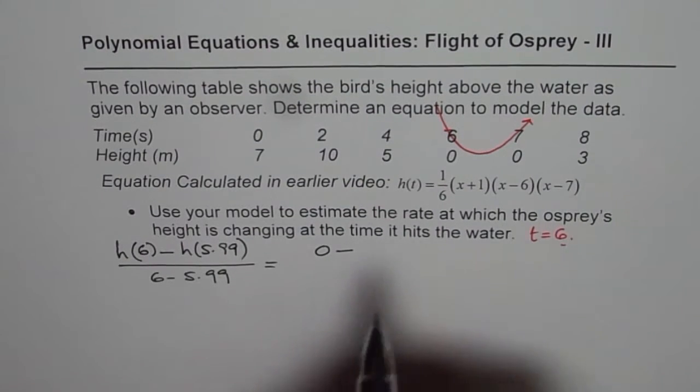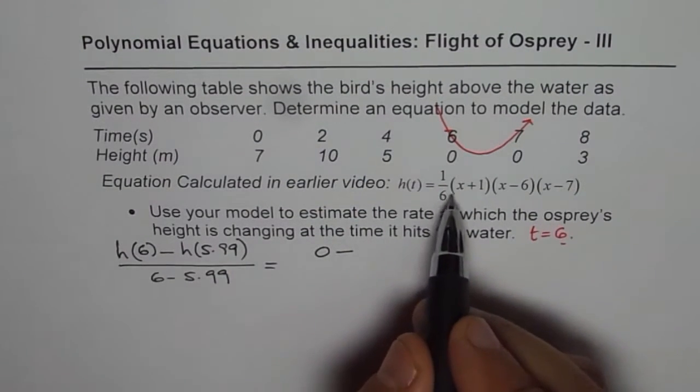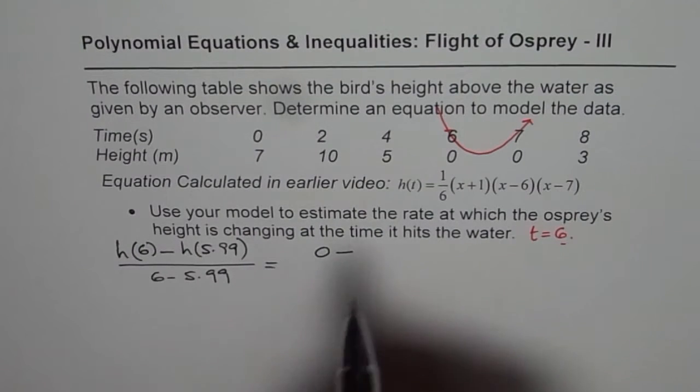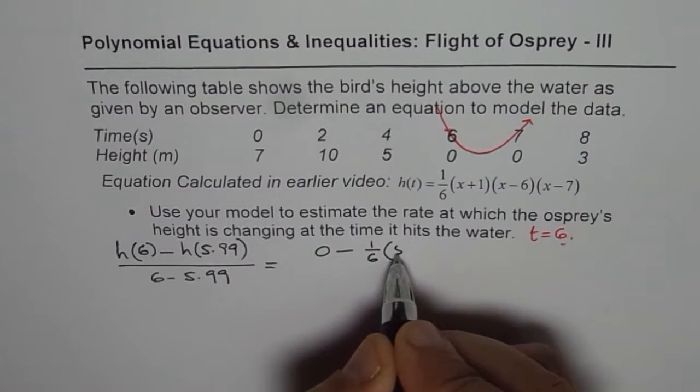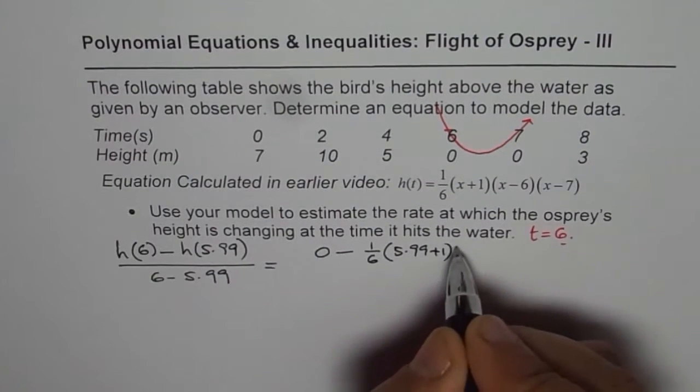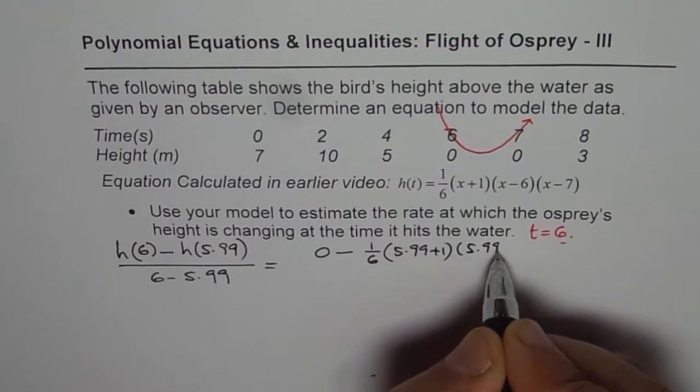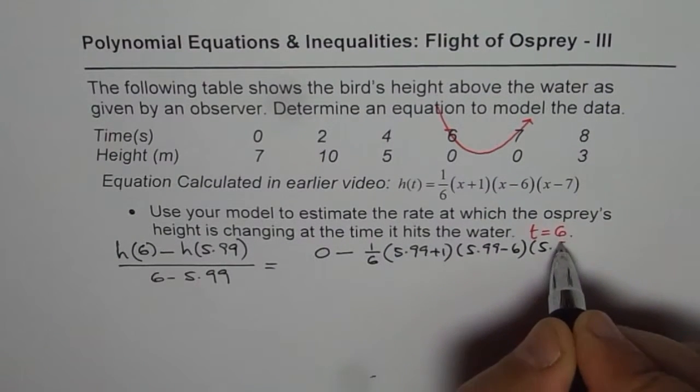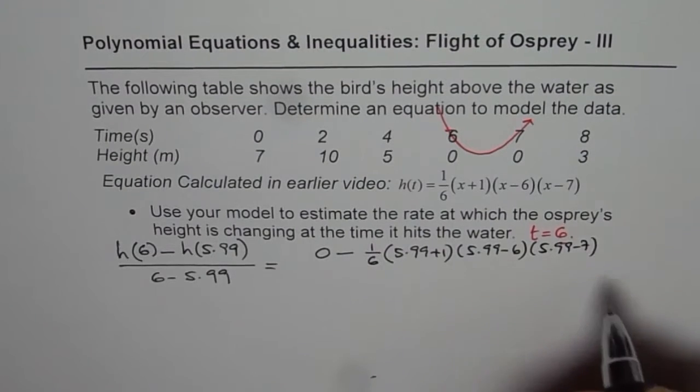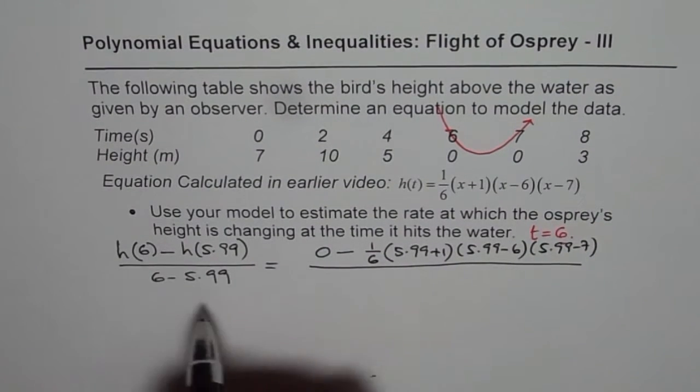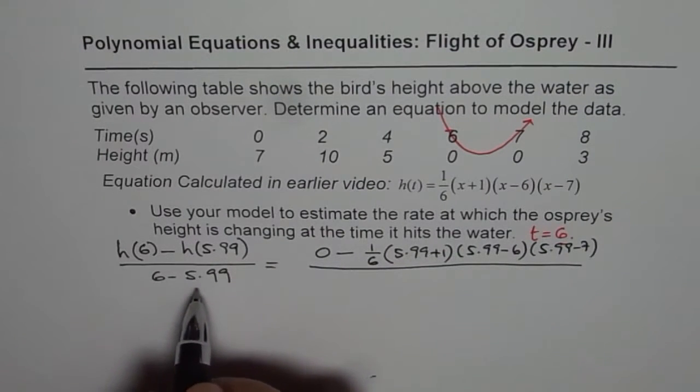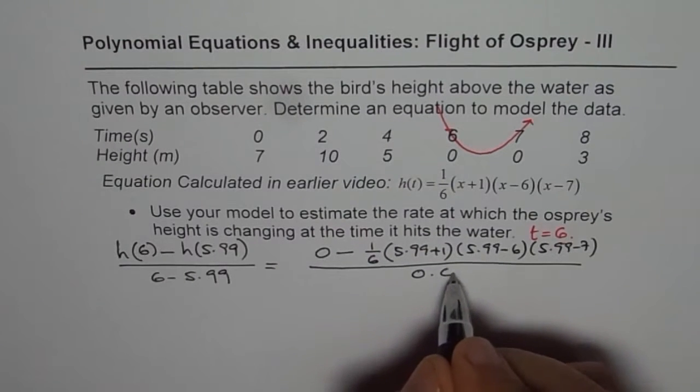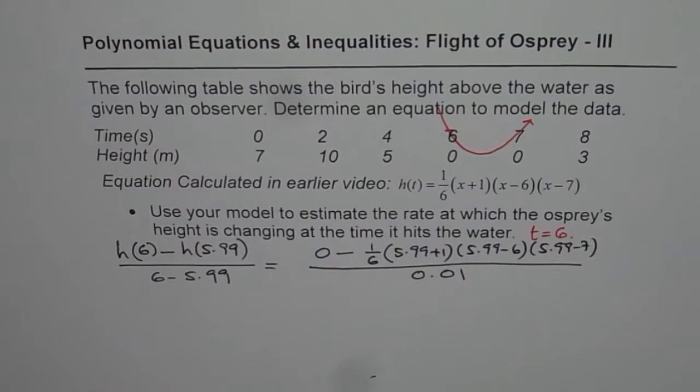So it is 0 minus... I need to calculate the value when x is 5.99. So let us calculate: it is (1/6)(5.99+1)(5.99-6)(5.99-7). Everything divided by, now, 6 minus 5.99, that means 0.01, correct? So that is what we need to calculate.